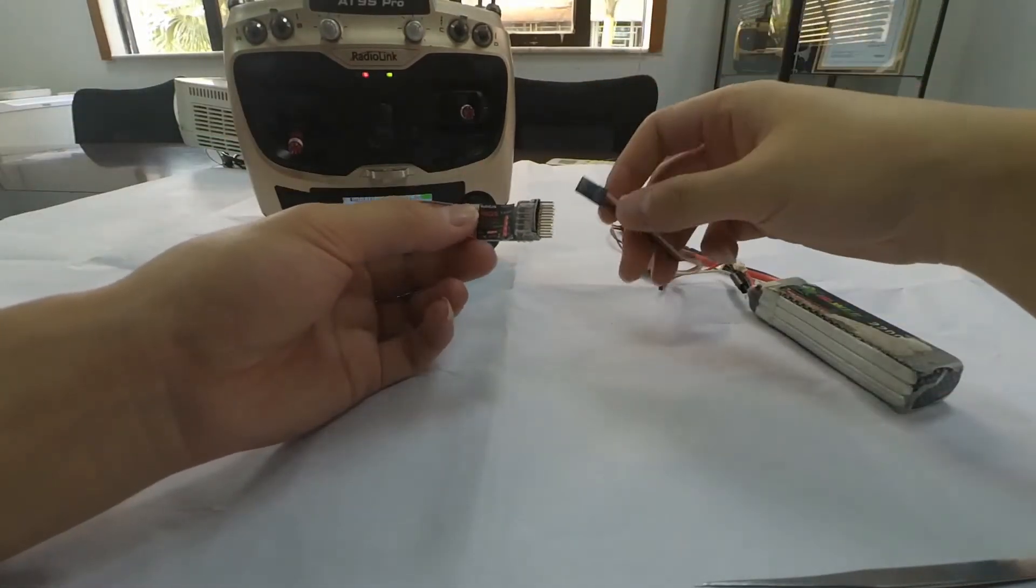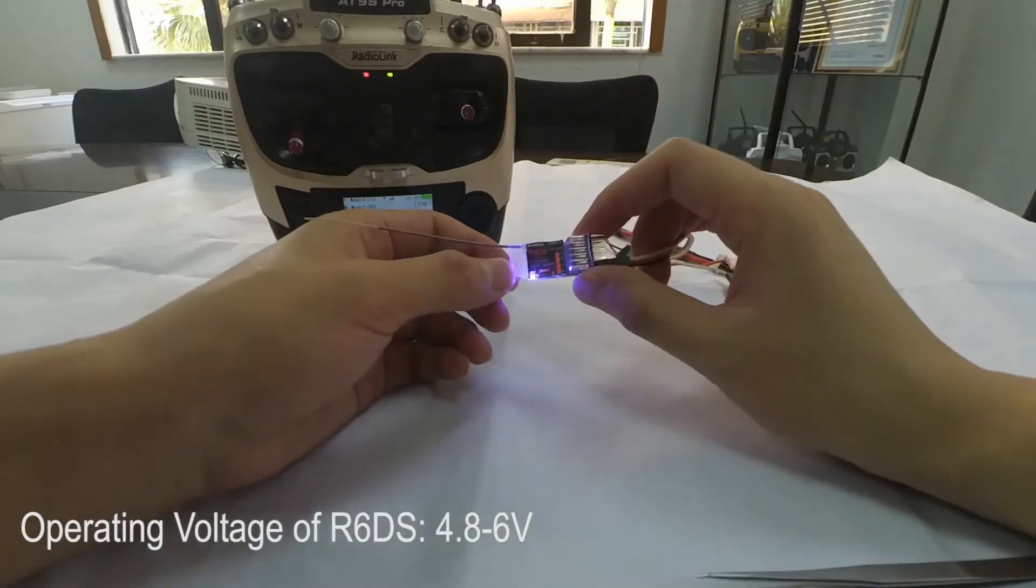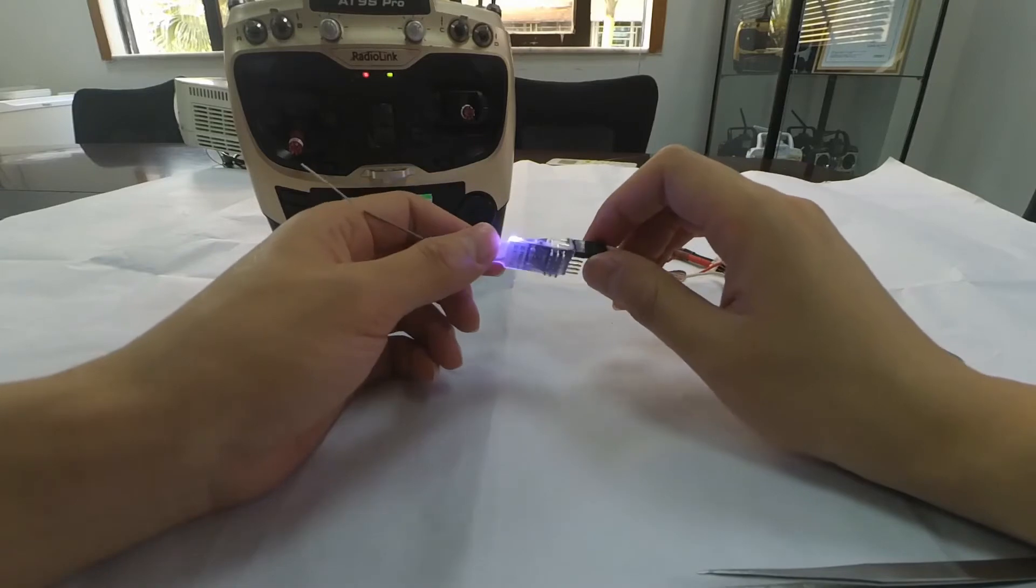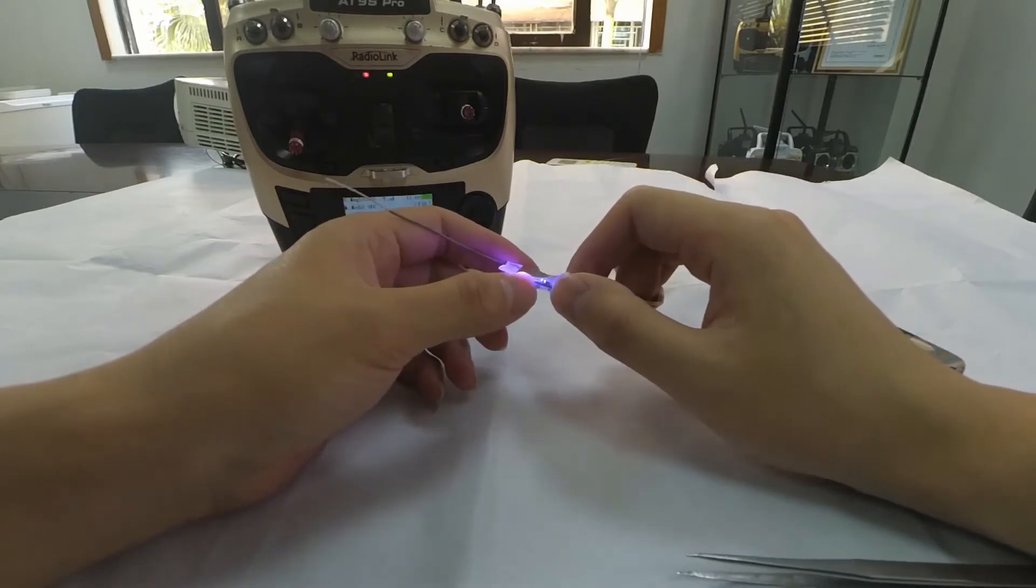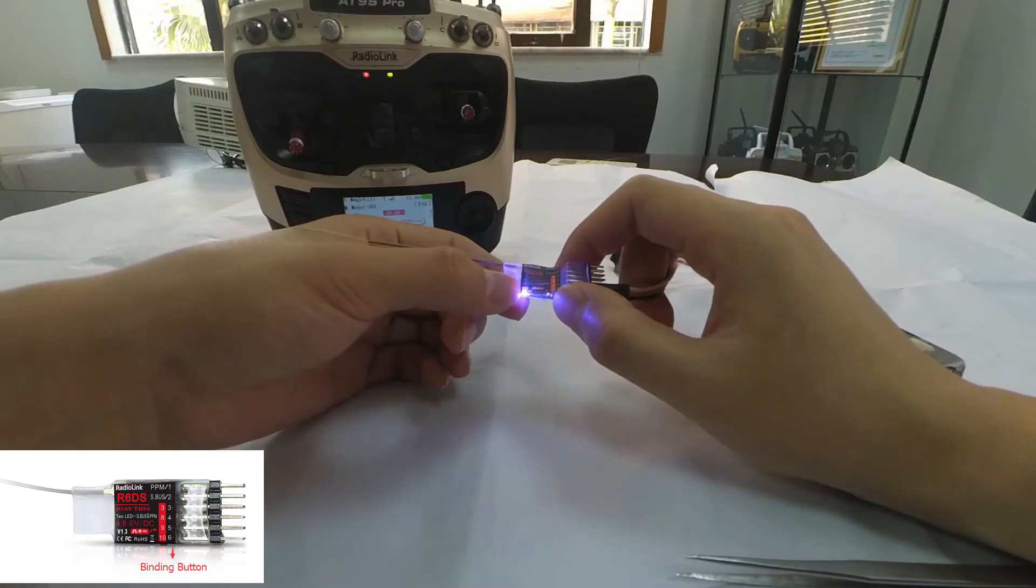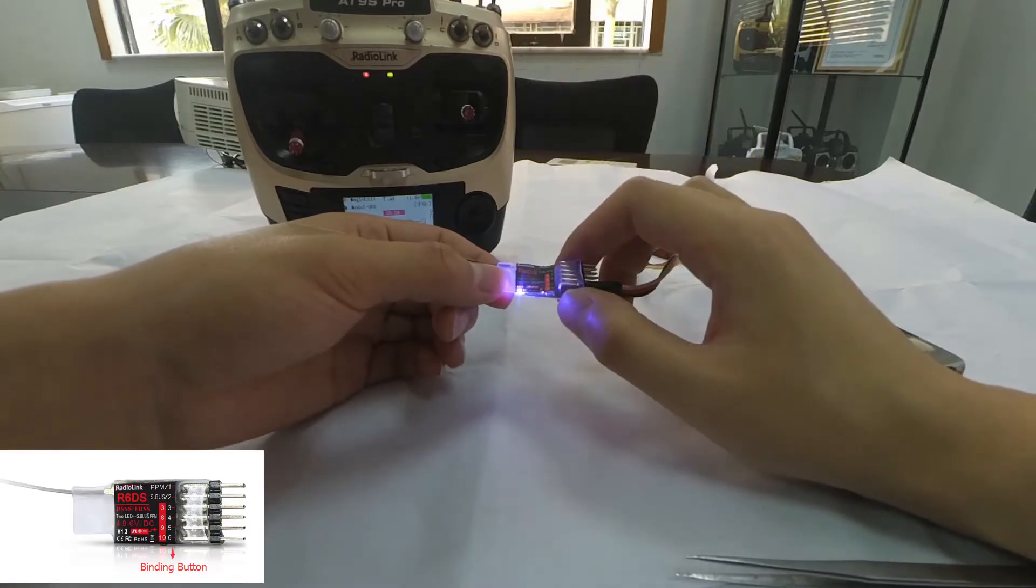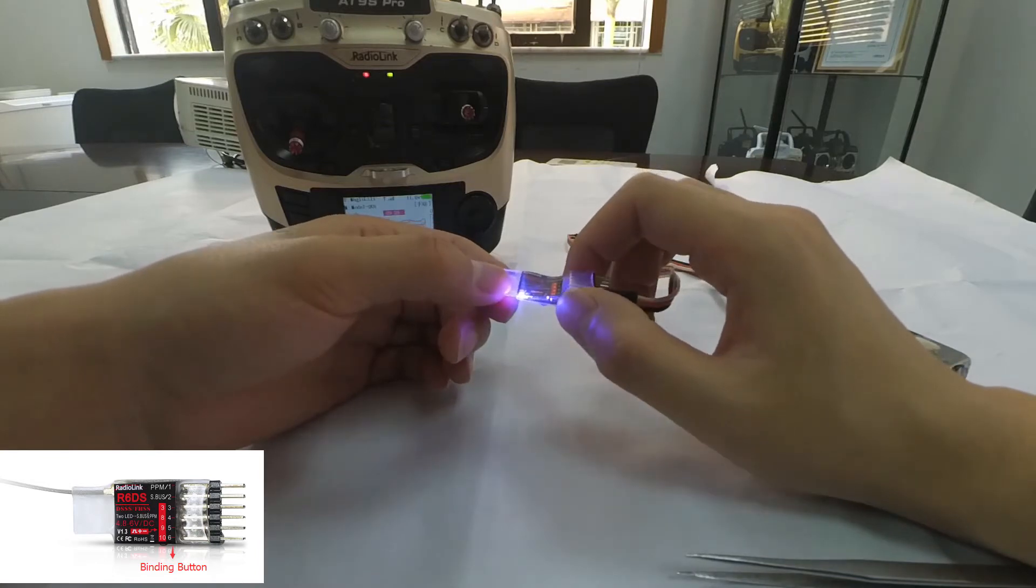Power on the receiver. Then we can see that the LED indicator is always on. Long press the binding button until the LED indicator flashes quickly, meaning binding process is ongoing, and release the button.